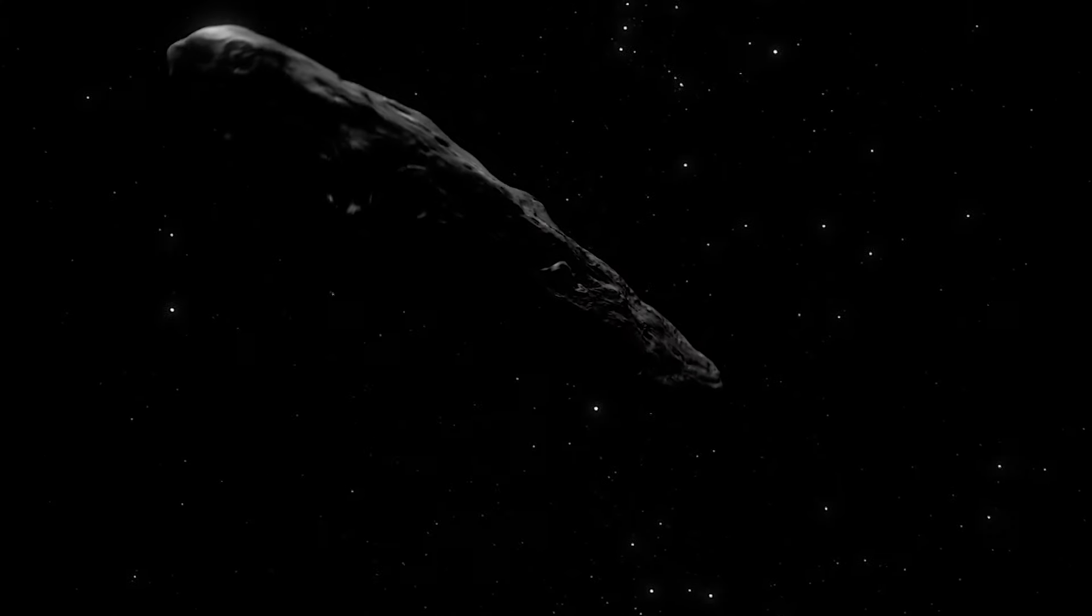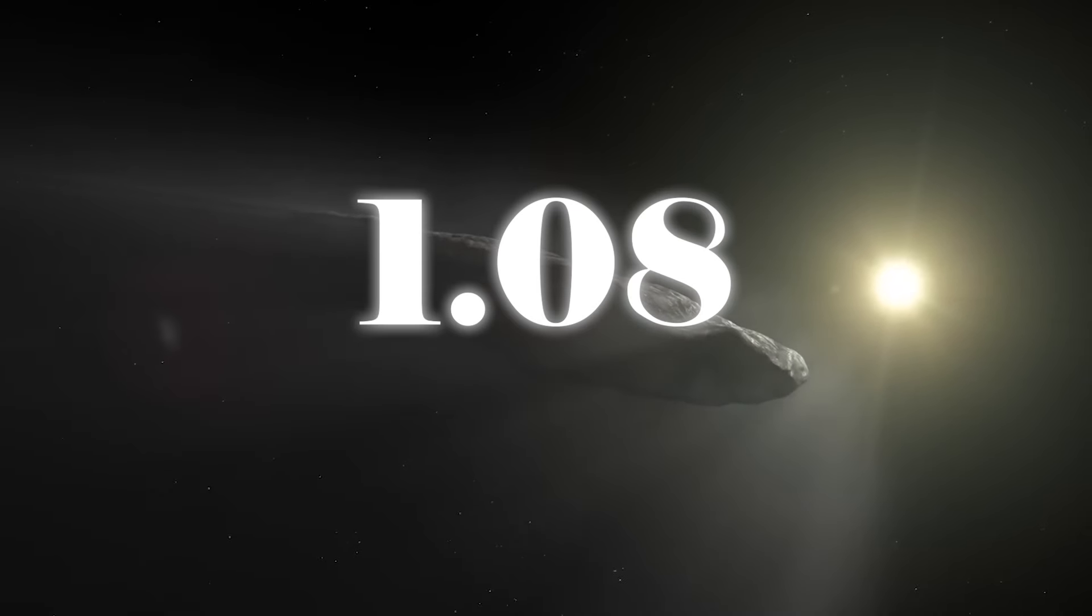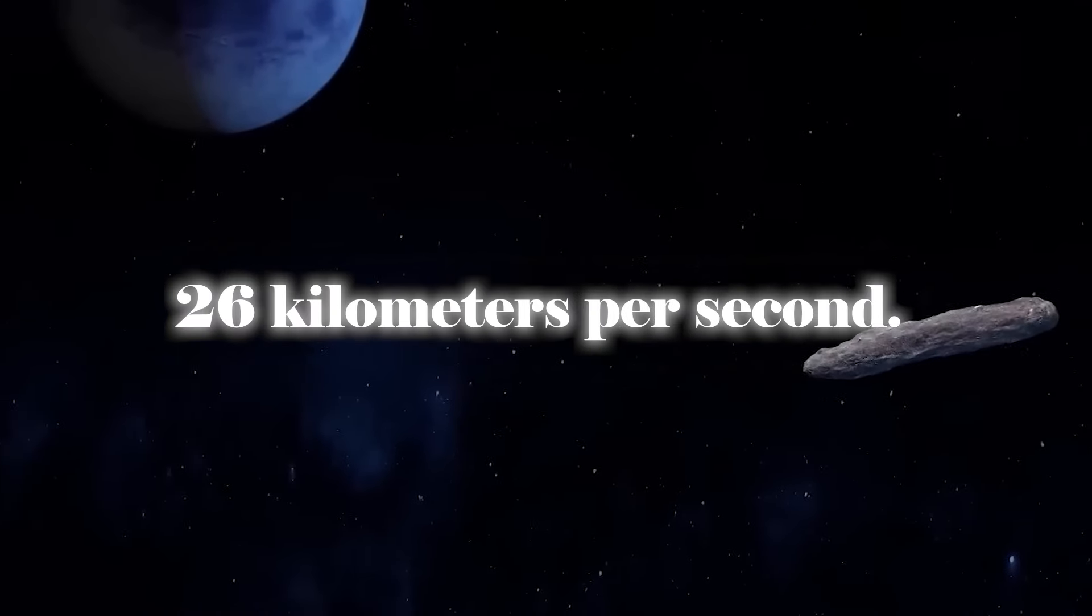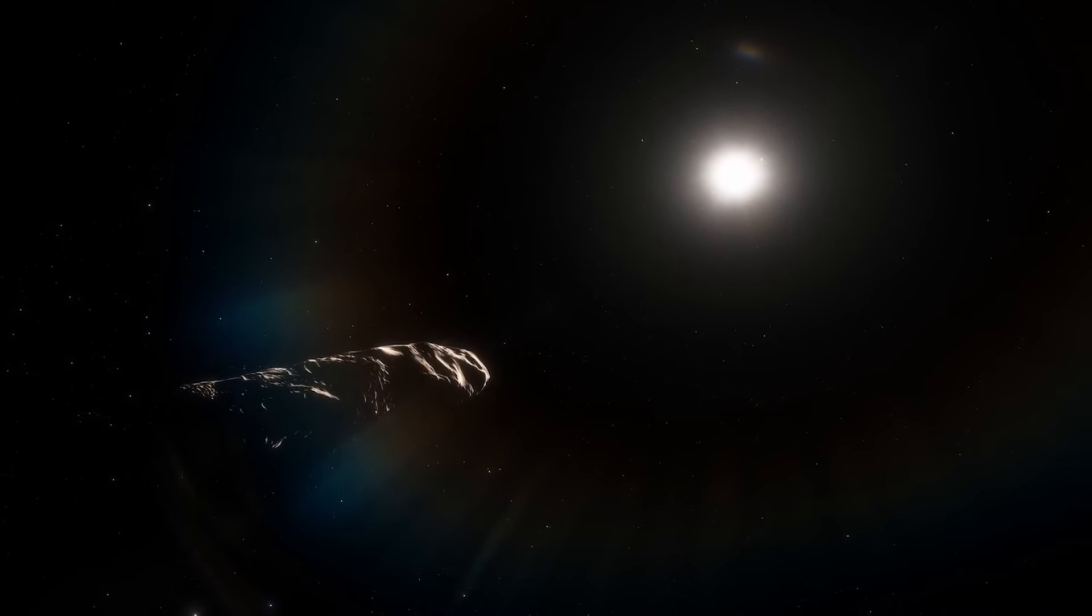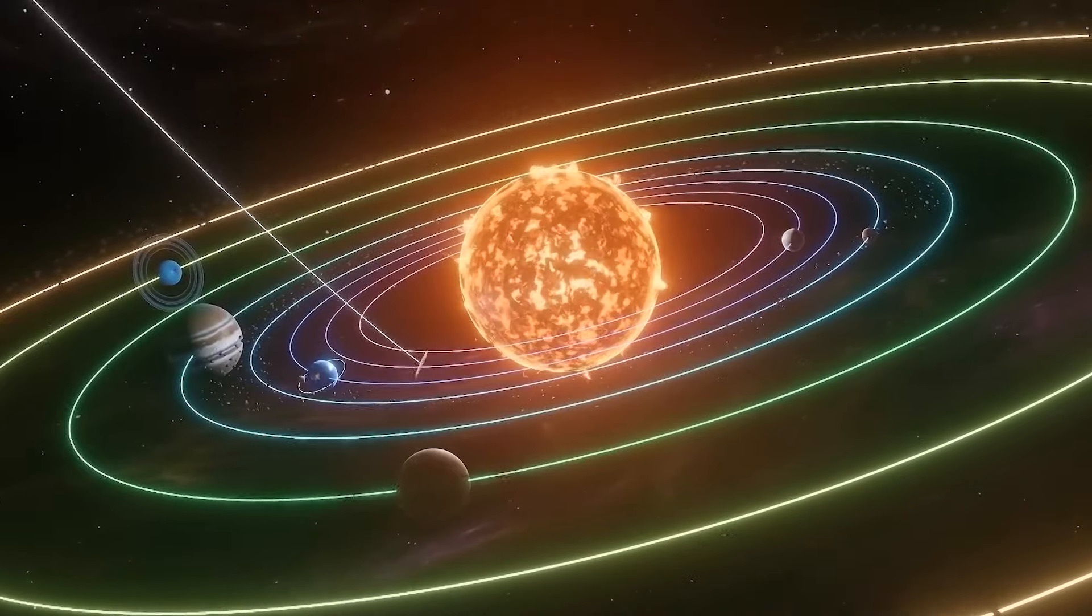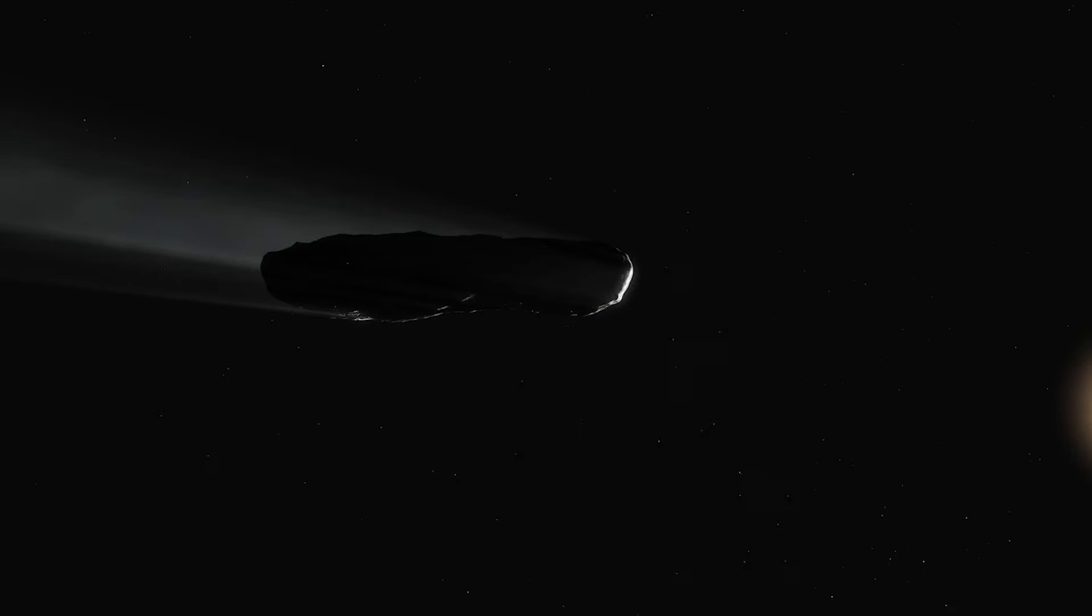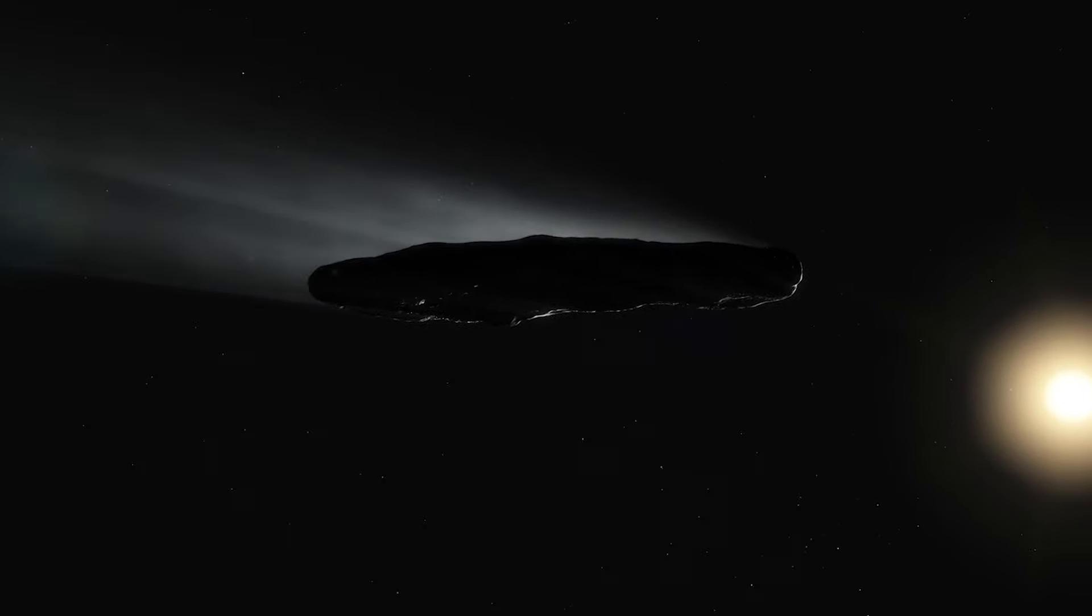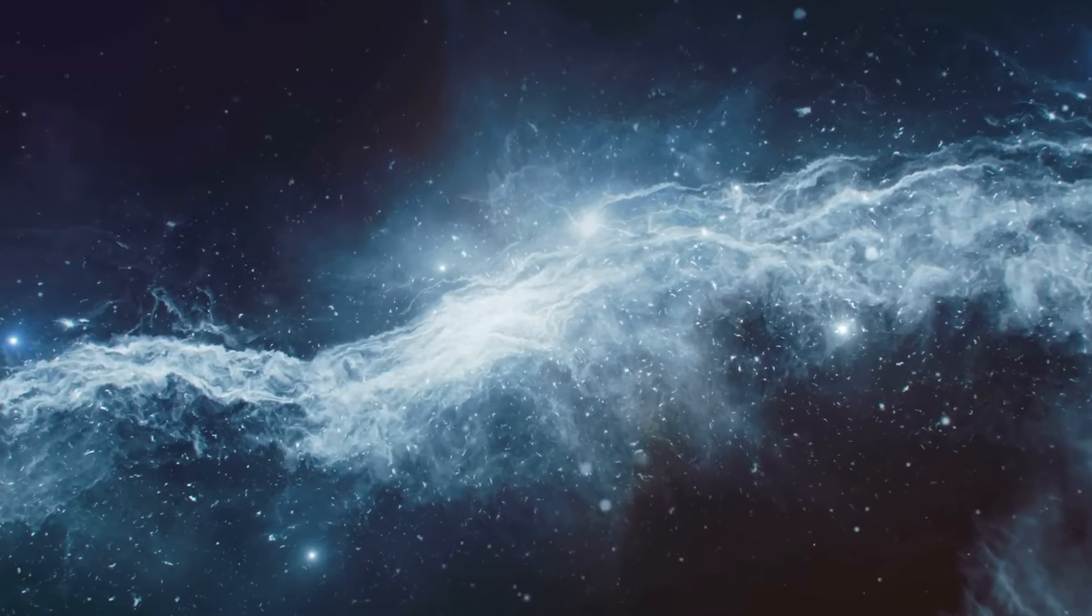Oumuamua, on the other hand, revealed an unusually high eccentricity of about 1.2, corresponding to an escape velocity of 26 km per second. This speed made it the fastest object to exit the solar system. An escape at such a speed would be impossible, even through a gravitational interaction with planets such as Jupiter or Neptune, unless these planets did not get in the way of Oumuamua's path. This strongly suggests that Oumuamua had to have originated outside our cosmic neighborhood.